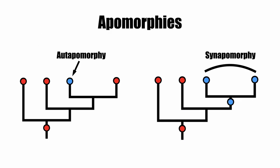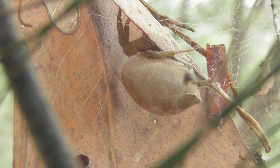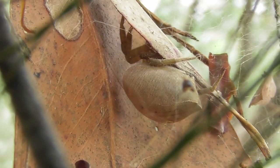An autapomorphy is an apomorphy that is unique to a single taxon, while a synapomorphy is an apomorphy shared by multiple taxa, hypothesised to have evolved in their most recent common ancestor and subsequently inherited by all descendants of that ancestor. Because apomorphies are unique to a single clade or taxon, they can be used to distinguish them from other taxa.